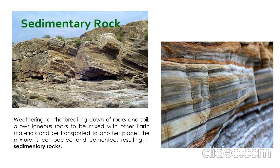Clastic sedimentary rocks, like sandstone, form from grains or pieces of rock. Organic sedimentary rocks, like coal, form from hard biological materials like plants, shells, and bones that are compressed into rock.